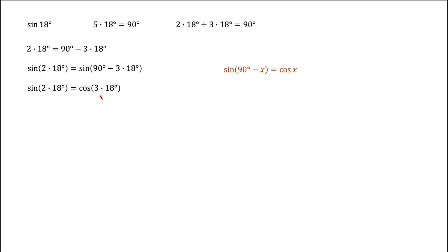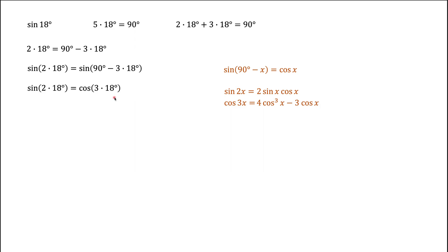We simplify the right-hand side by noting that sine of (90 minus x) equals cosine x, so the right-hand side becomes a cosine. There are formulas for double and triple angles — the formula for sine of a double angle, and the formula for cosine of a triple angle. We're going to use these formulas to write the equation in terms of sines and cosines of just 18 degrees.